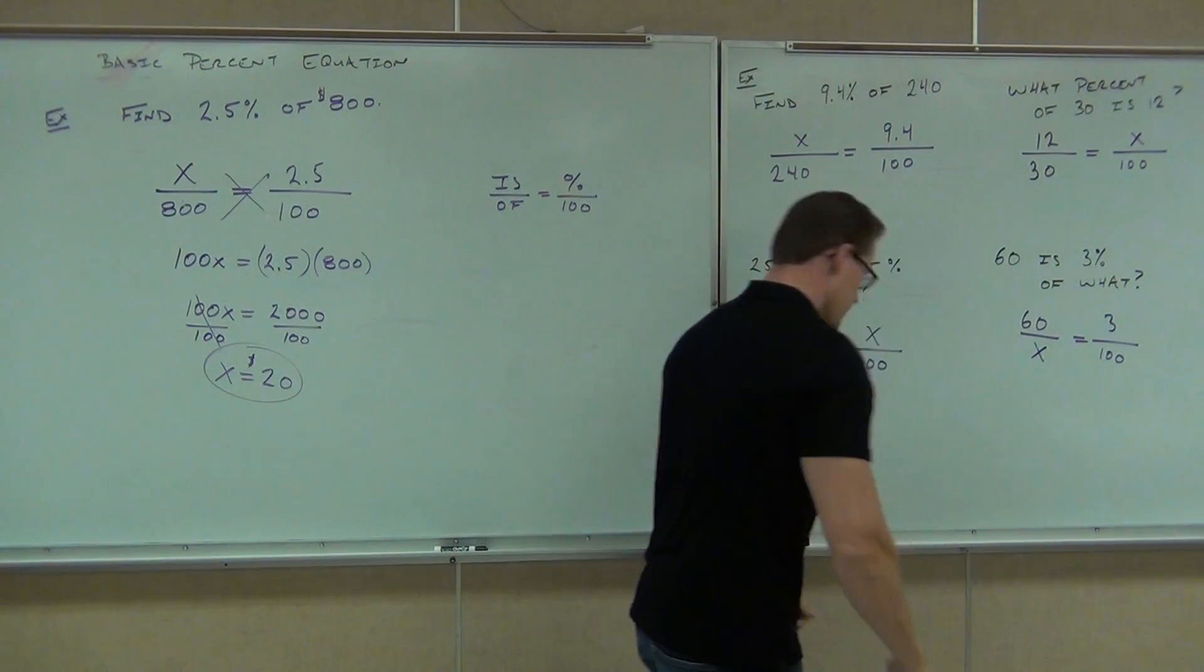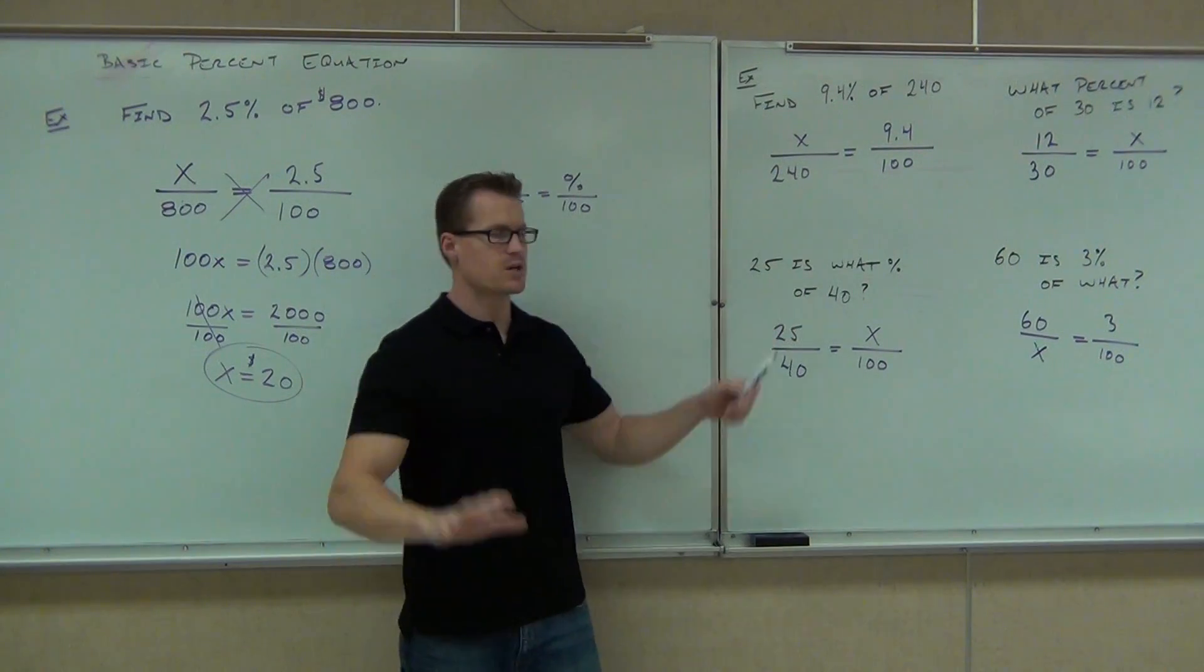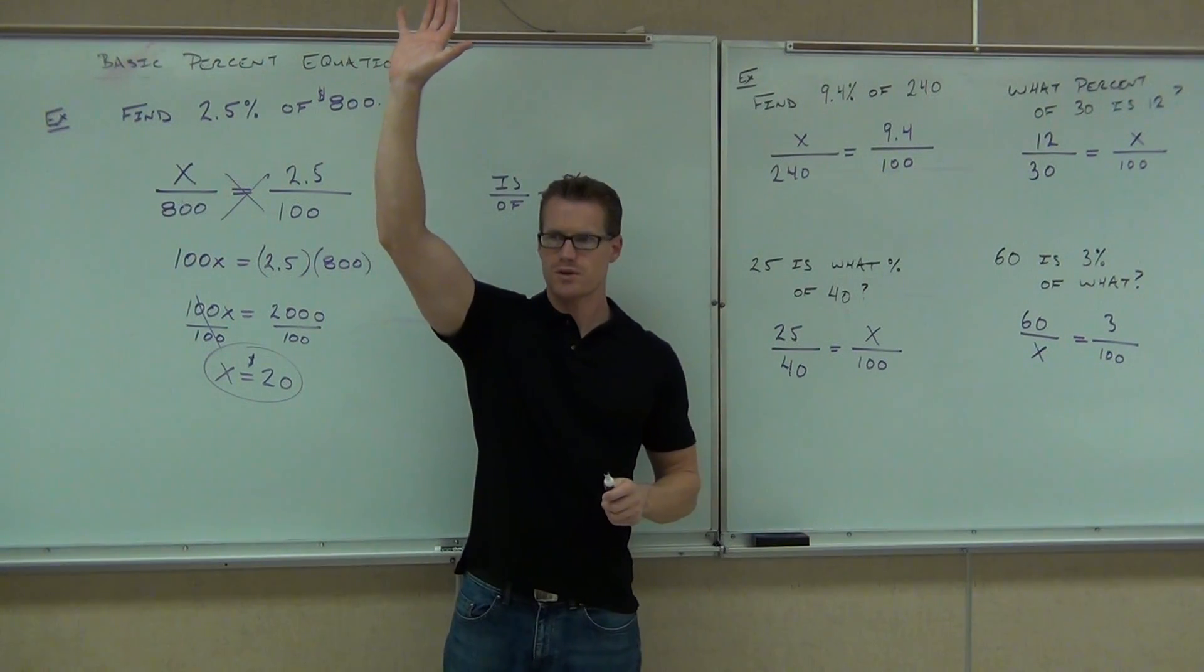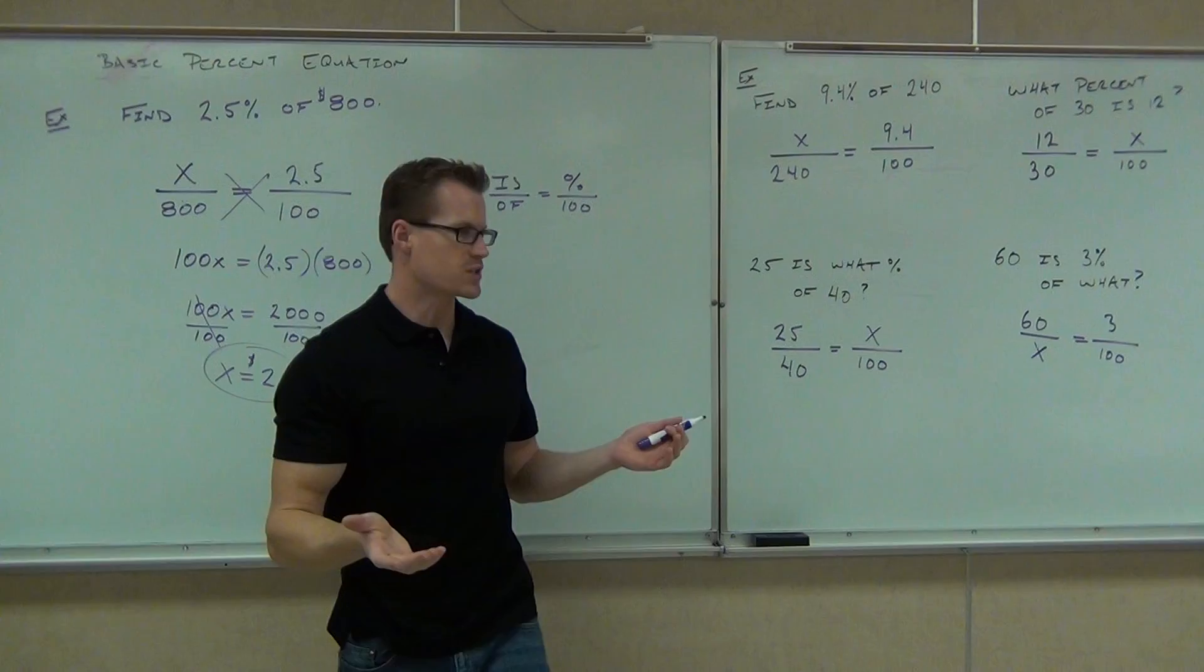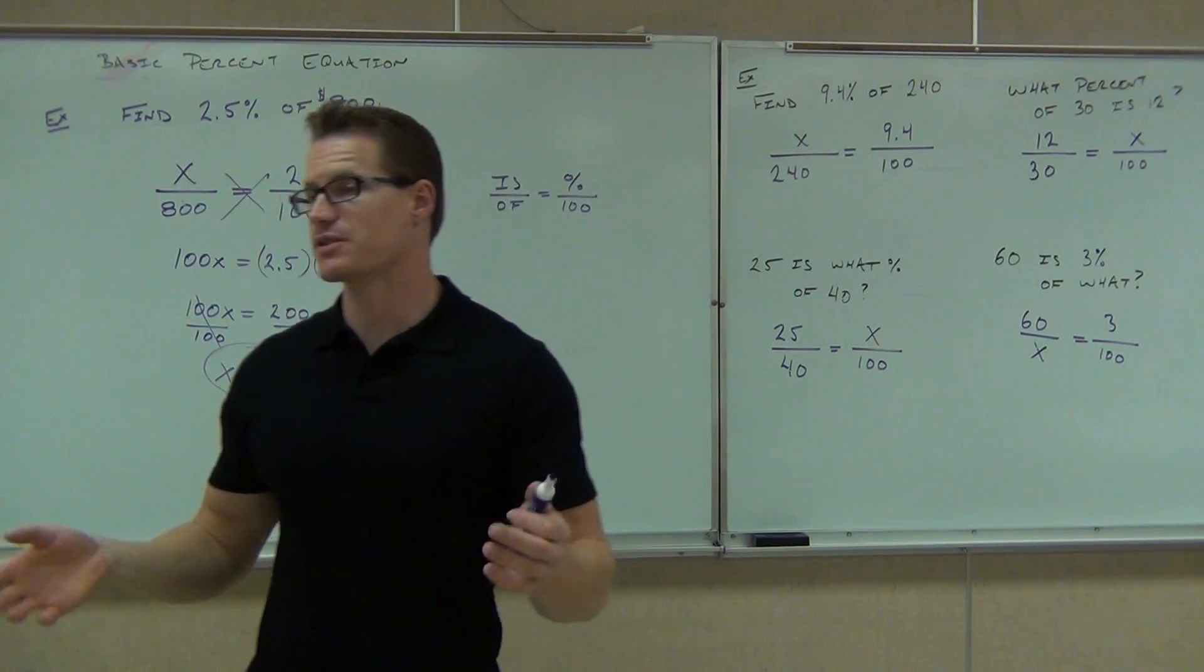X for of. I need to show hands if you understand where all these numbers are from on all four examples. Good for you. Now, all of them are solved the same way. We're going to cross-multiply and divide. It's a two-step problem.